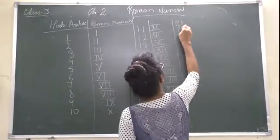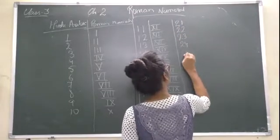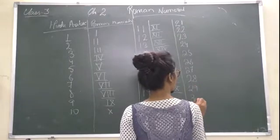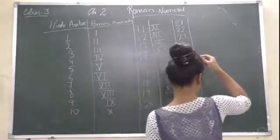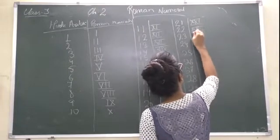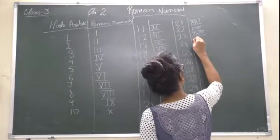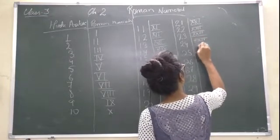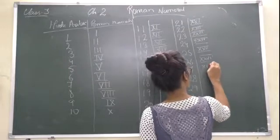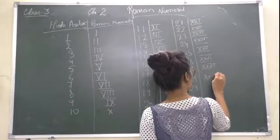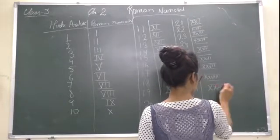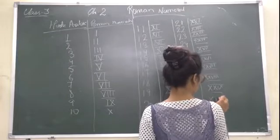21, 22, 23, 24, 25, 26, 27, 28, 29, 30. Okay, so 21 is denoted as XXI, XXII, XXIII, XXIV, XXV, XXVI, XXVII, XXVIII, XXIX, XXX.